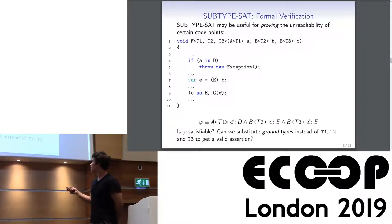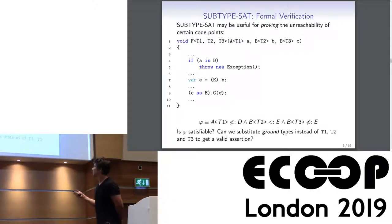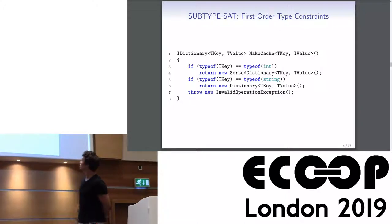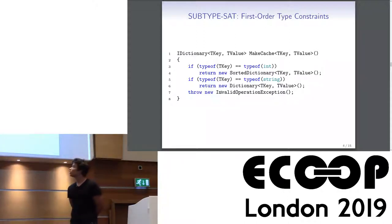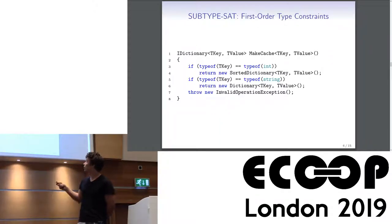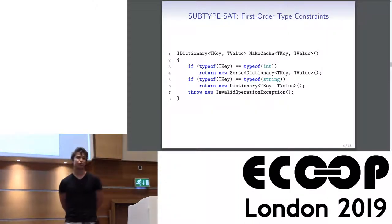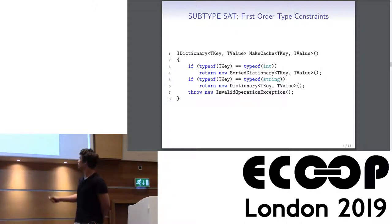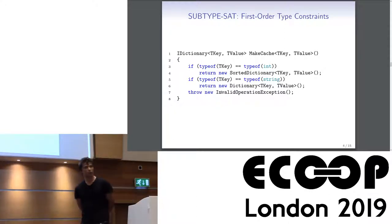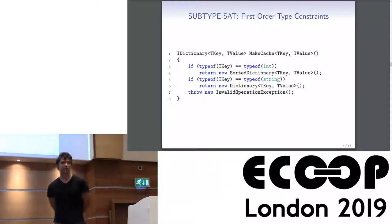If the formula is satisfiable, we have a substitution of type parameters leading to the exception. If it is unsatisfiable, we have proved the safety of that line. A second source of motivation is more advanced type parameter constraint systems: in practice, functions may have implicit contracts on type variables that we would like to prove statically, but the type parameter constraint systems in languages like C# are not expressive enough to specify those contracts.